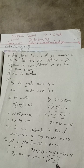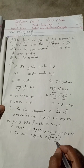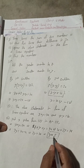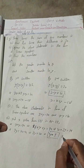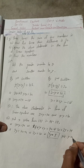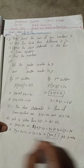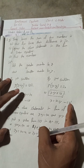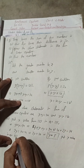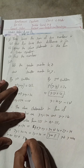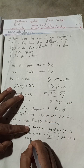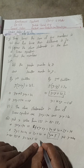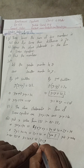Now that we have the y value, we put y equals 5 back into Equation 2: x equals 4 plus y equals 4 plus 5, so x equals 9.